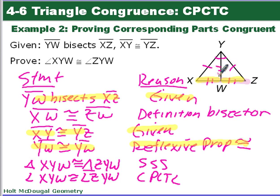The triangles are congruent by Side-Side-Side. Once we know that, we know corresponding parts of congruent triangles are congruent. So angle XYW is congruent to angle ZYW because those are corresponding angles.